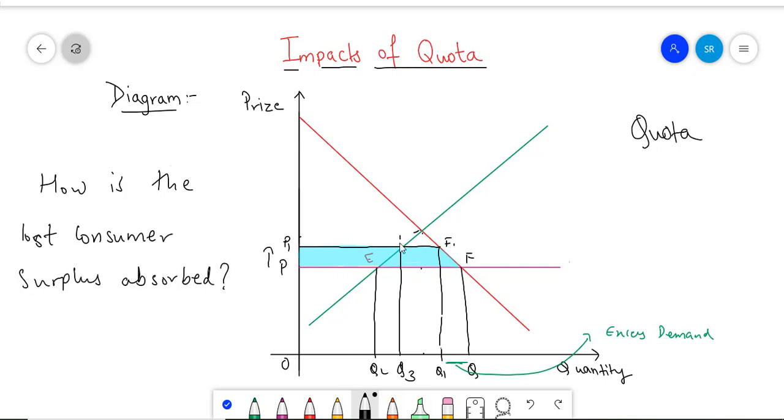Here again, the triangle A, E, B will showcase the protective effect. The area P1, P, A, E will showcase their redistributive effect. The triangle F1, C, F will showcase the consumption effect. This is something we already did in the previous video.